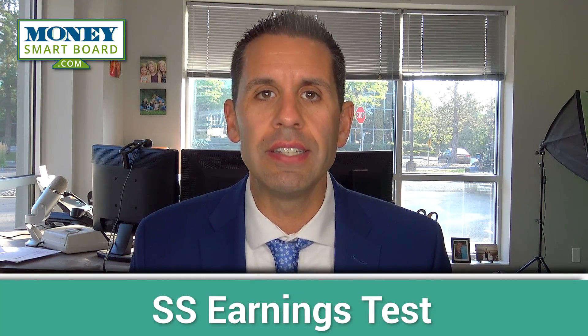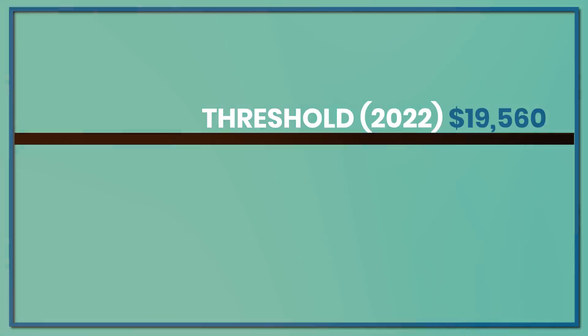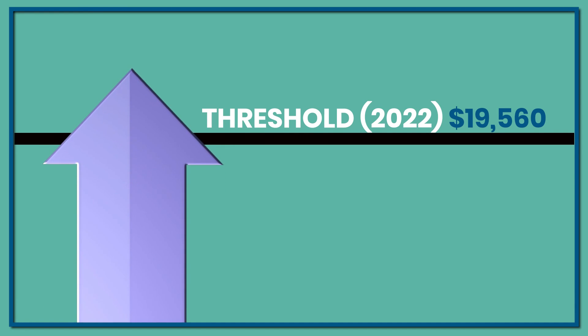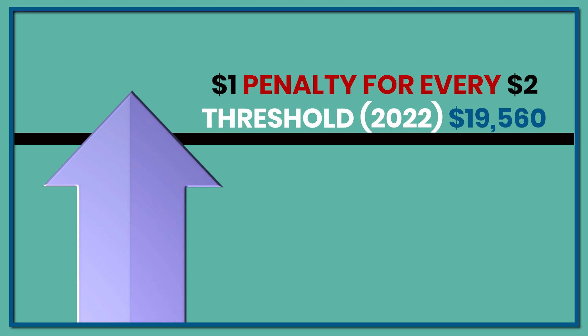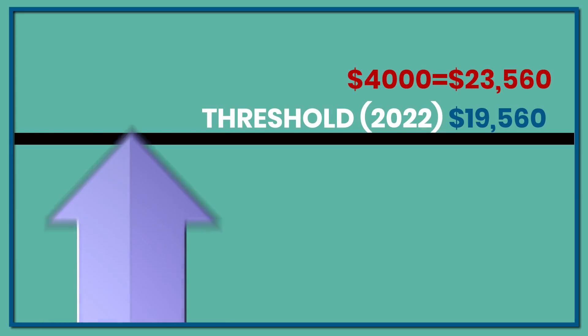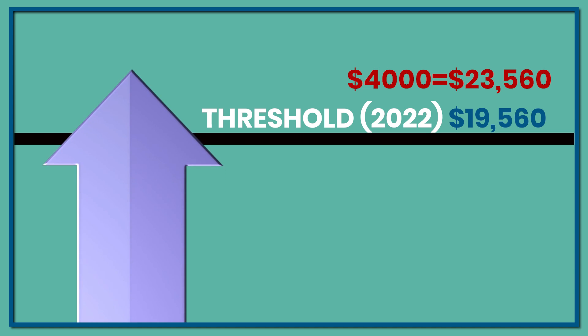Here's how the Social Security earnings test works. You turn on your benefit prior to full retirement age and you're still working with earned income coming in. The IRS sets a limit every year — in 2022, the income threshold is $19,560. As long as you earn under that amount, nothing happens and you keep all your Social Security. But as soon as you go above that threshold, they assess a penalty of $1 for every $2 you earn over it — essentially a 50% penalty. So if you earn $4,000 over that threshold, they will assess a $2,000 penalty against your Social Security benefit.